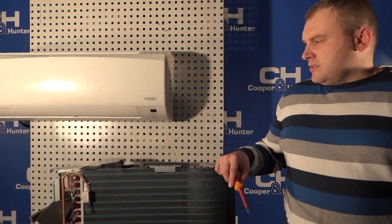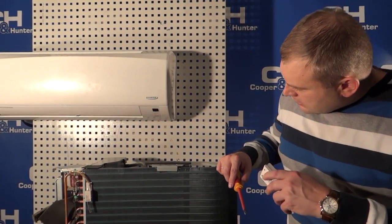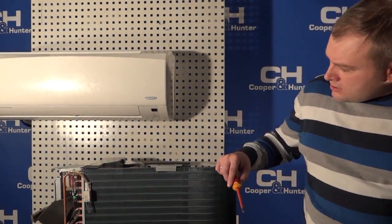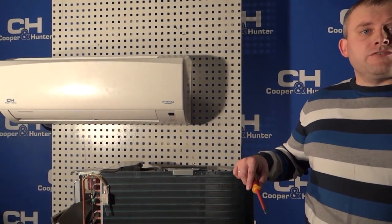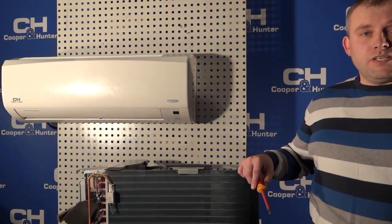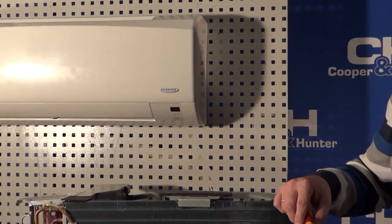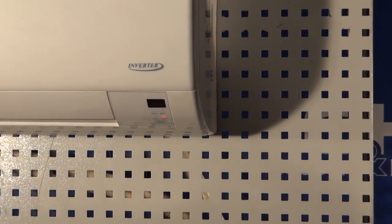When the display of the window unit shows error codes F3, F4, or F5, it is necessary to diagnose the temperature sensors of the outdoor unit.